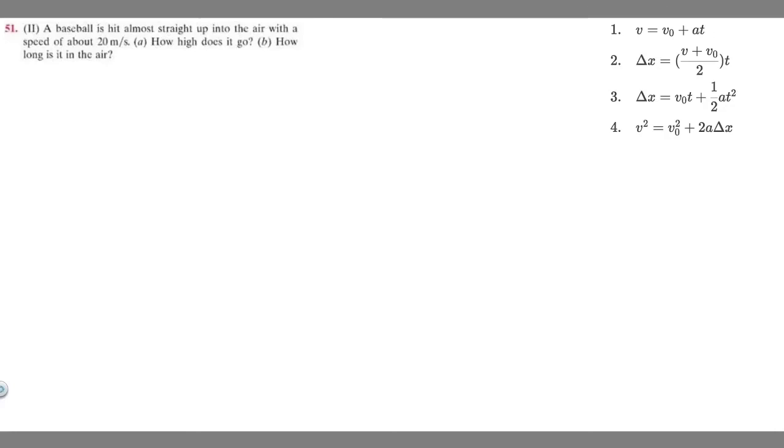In this problem we're told a baseball is hit straight up into the air with a speed of 20 meters per second, and we're asked how high does it go and how long is it in the air. So let's write down what we're given first. It's told that the ball is hit straight in the air with a speed of 20 meters per second, so they're telling us right when the ball is hit in the air